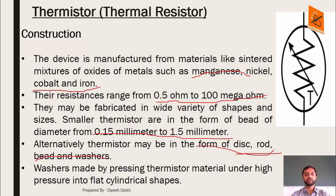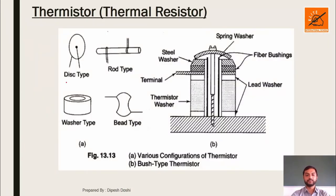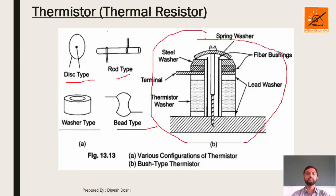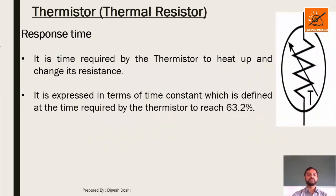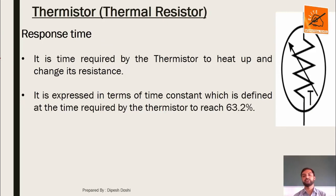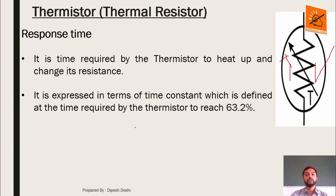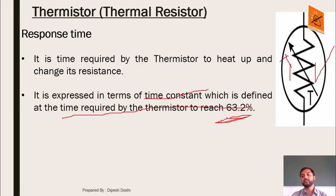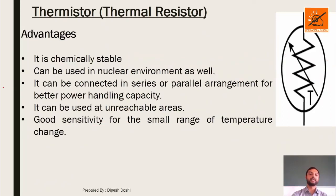Thermistors are fabricated in a variety of shapes and sizes with diameter 0.15 mm to 1.5 mm. They may be in the form of disc, rod, bead, and washers — also bush type. Response time is the time required by the thermistor to heat up and change its resistance, expressed as a time constant defined as the time required to reach 63.2% of its final heat value.